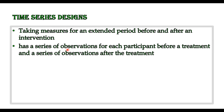In a normal experimental design, we have only one pre-test or only one observation, then we go for treatment, and then a post-test. In a time series design, we go for a number of pre-tests or pre-observations, then we go for our intervention or treatment, and then we go again for a number of post-tests or observations.